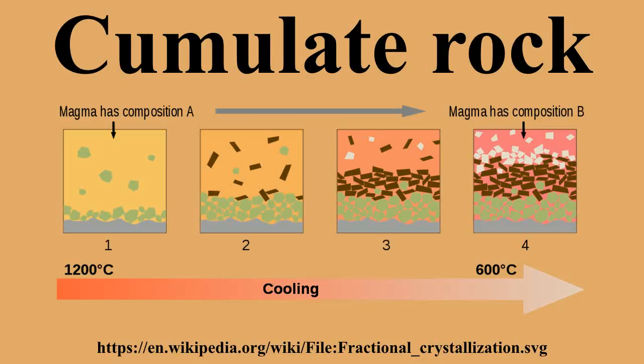Cumulates are named according to the dominant mineralogy and the percentage of crystals to the groundmass. Adcumulates are rocks containing approximately 100 to 93% accumulated magmatic crystals in a fine-grained groundmass. Mesocumulates are rocks with between 93 and 85% accumulated minerals in a groundmass. Orthocumulates are rocks containing between 85 and 75% accumulated minerals in groundmass.